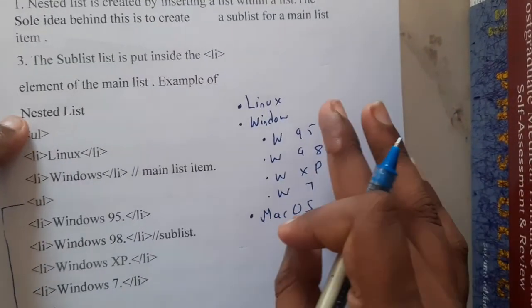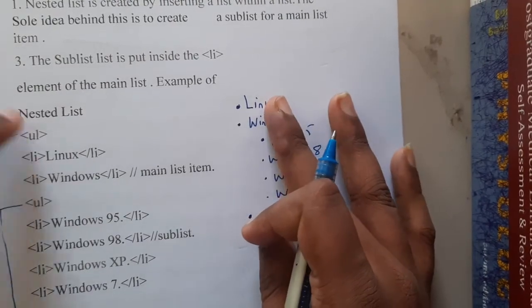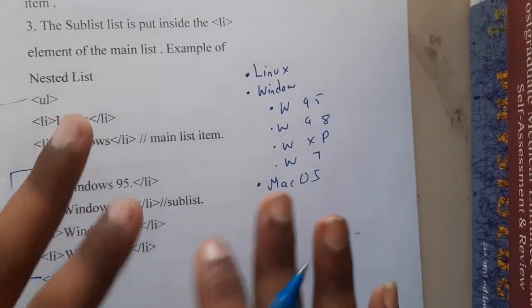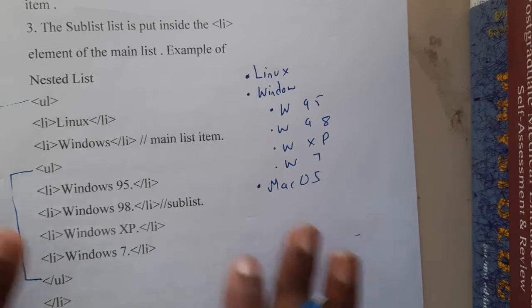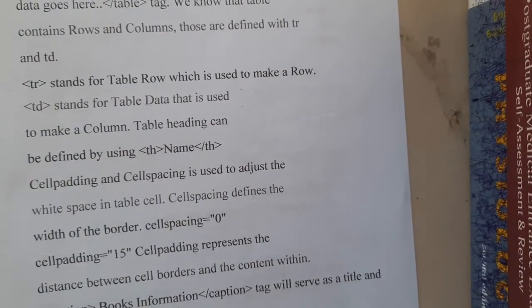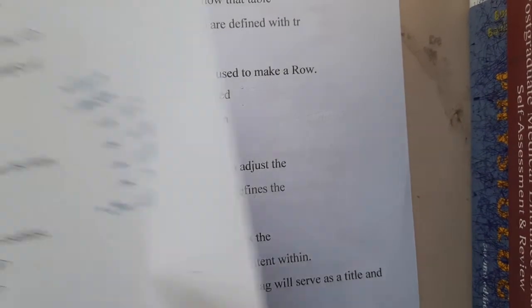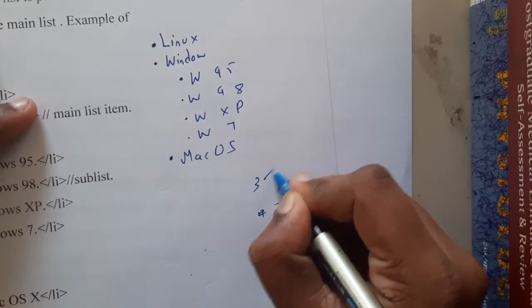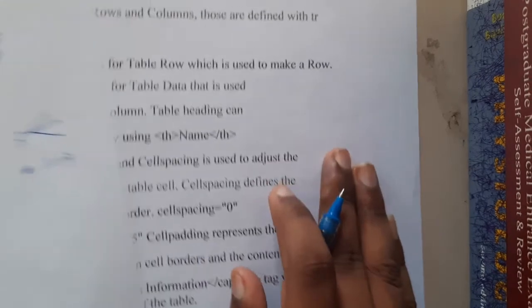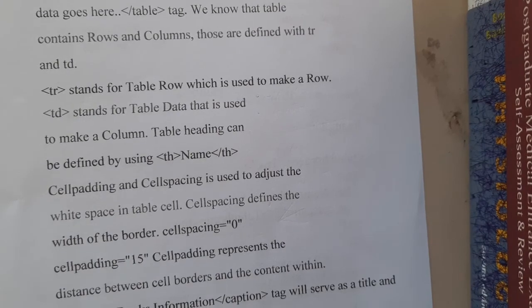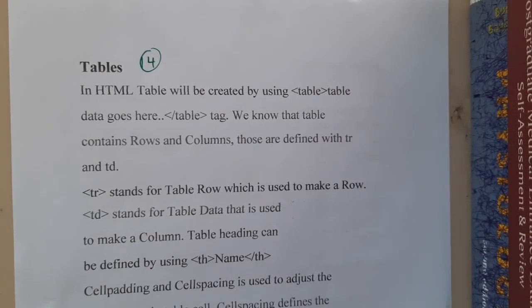In examinations, he will likely give you the output and ask you to write the code — the reverse process. Once we're done with theoretical concepts and basic examples, I'll take some previous year questions and we'll solve them together for a clear idea. We discussed three types of lists — ordered, unordered, and definition — plus nested list. In the next lecture we will start tables, then forms, and then solve previous year question papers. Thank you for watching.